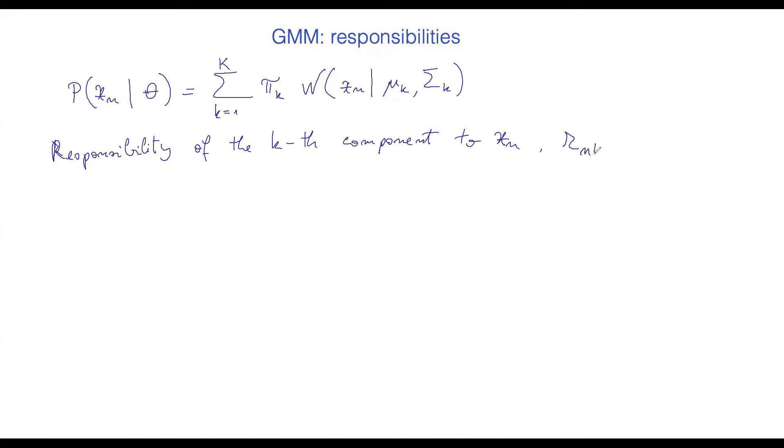is going to be like this, I'm going to denote it rnk, n is between 1 and capital N, and k is between 1 and capital K. So it's defined as rnk, it's going to be a normalized thing,